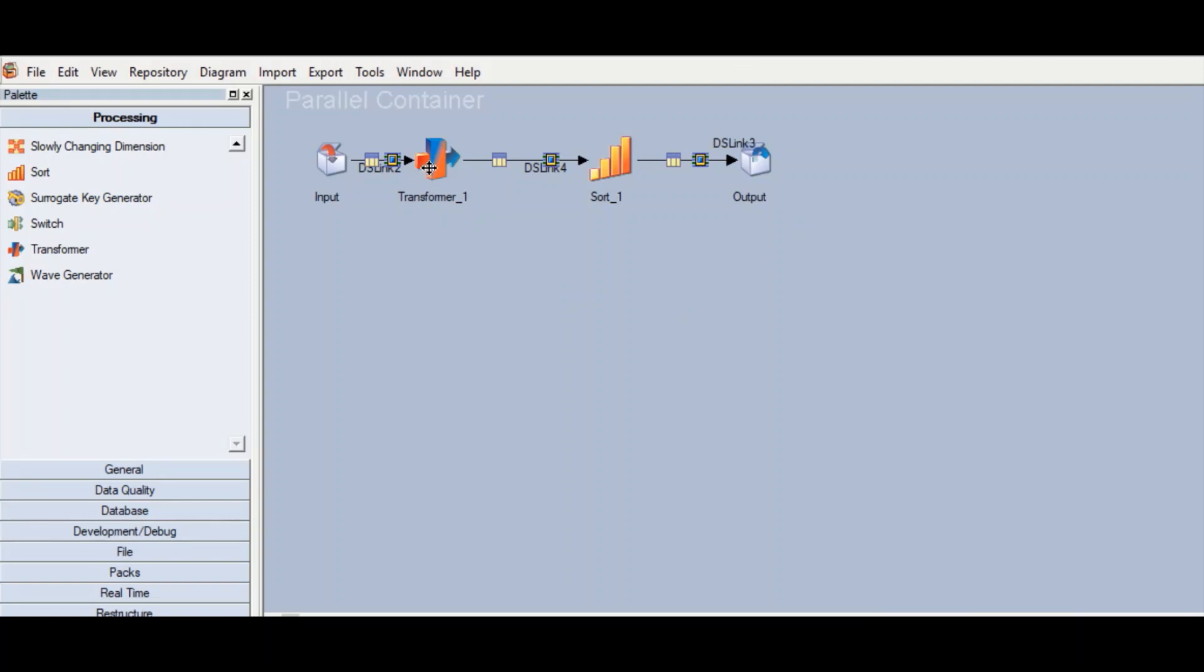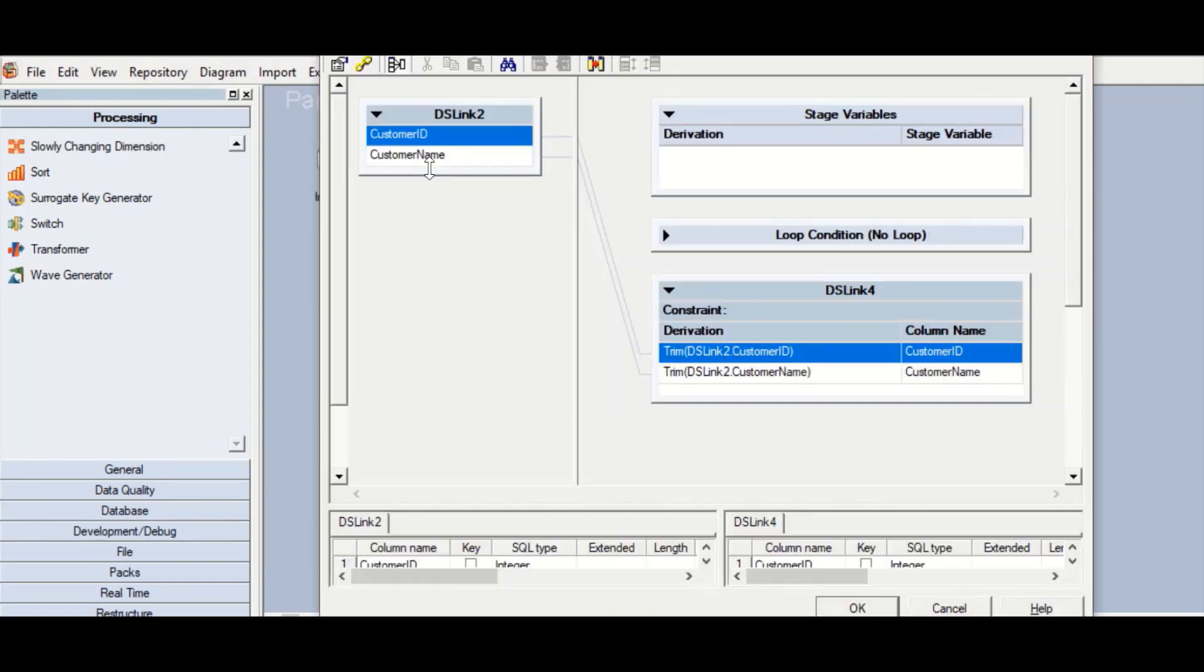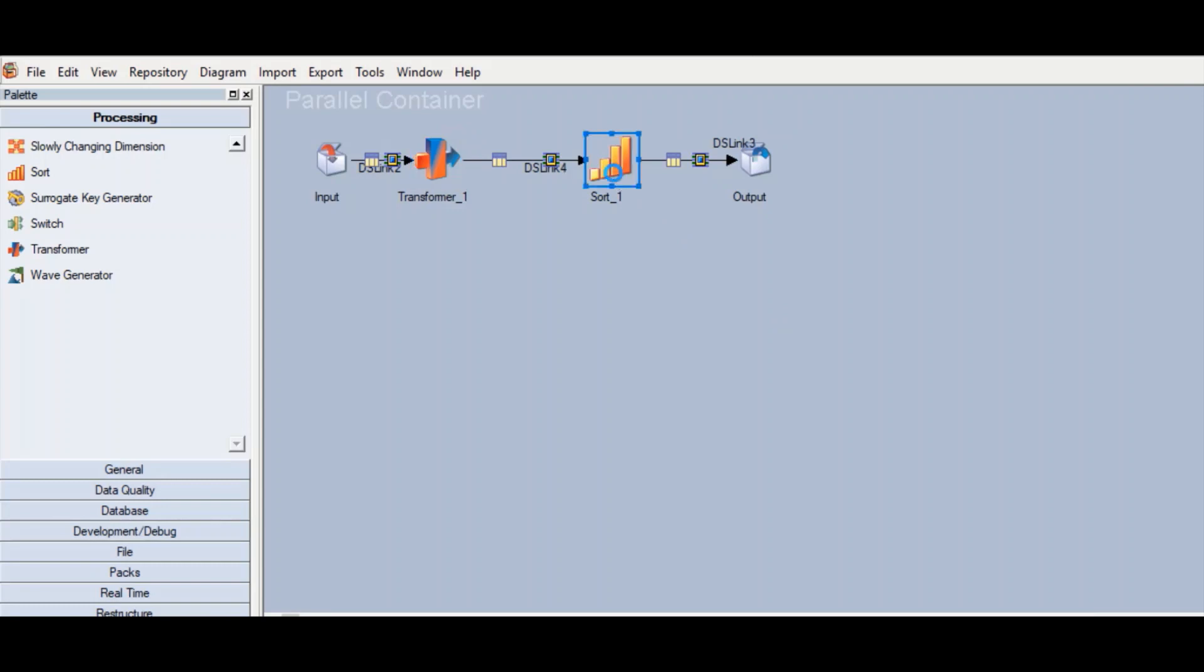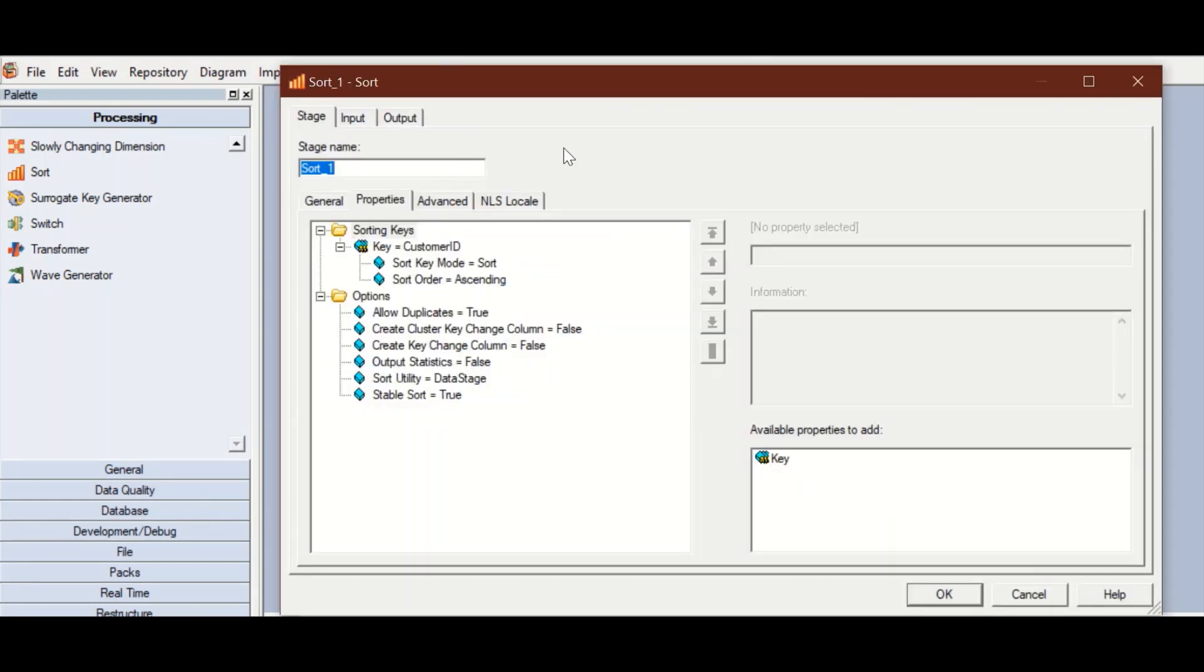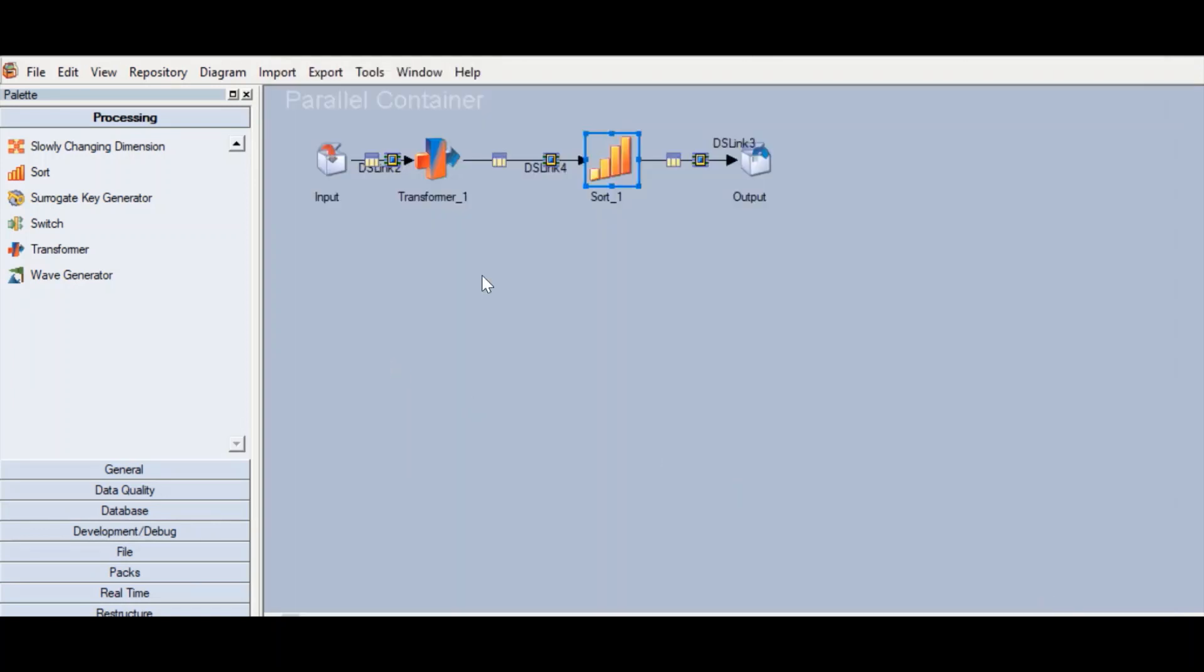You can see that there are two input and output interfaces added over here. If you click on the transformer, you can check that the same logic is replicated over here in the transformer. Similarly for the sort stage, the same logic is replicated. This is the part that you can use as a reusable component in the other jobs as well.